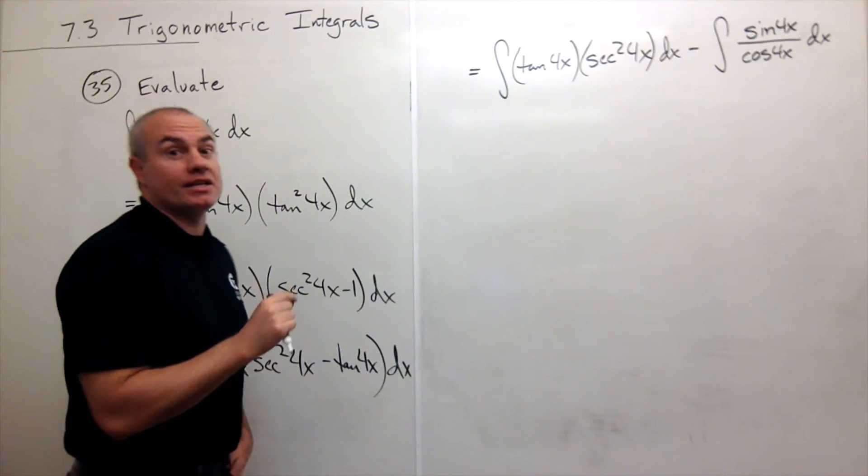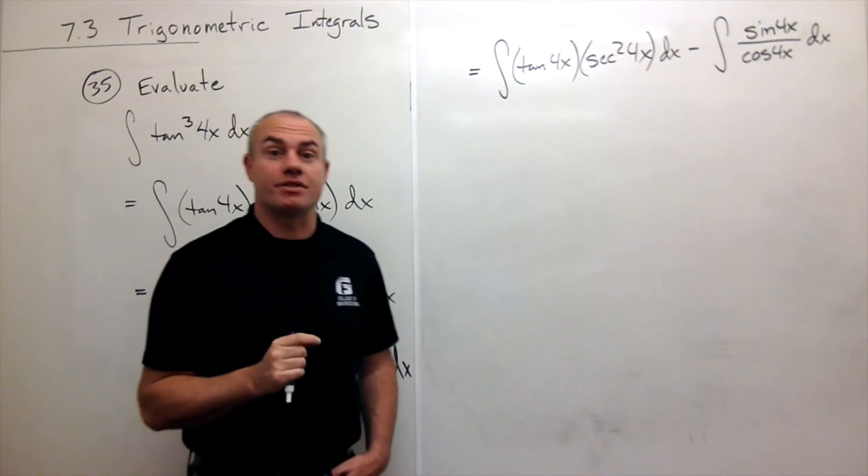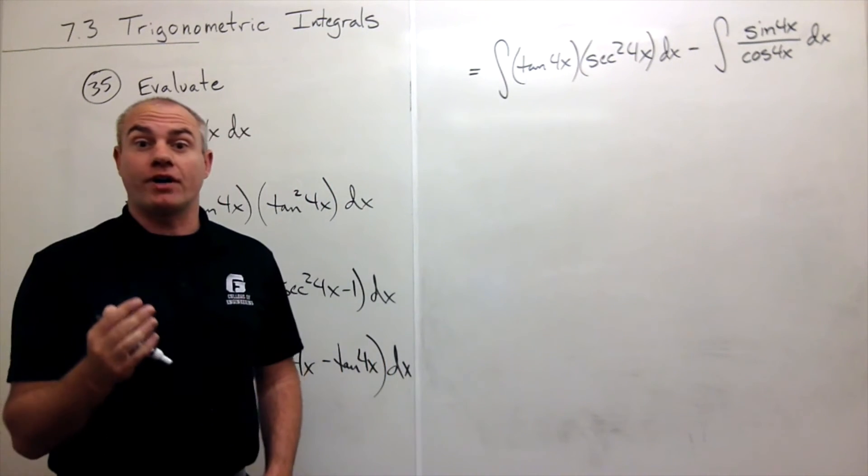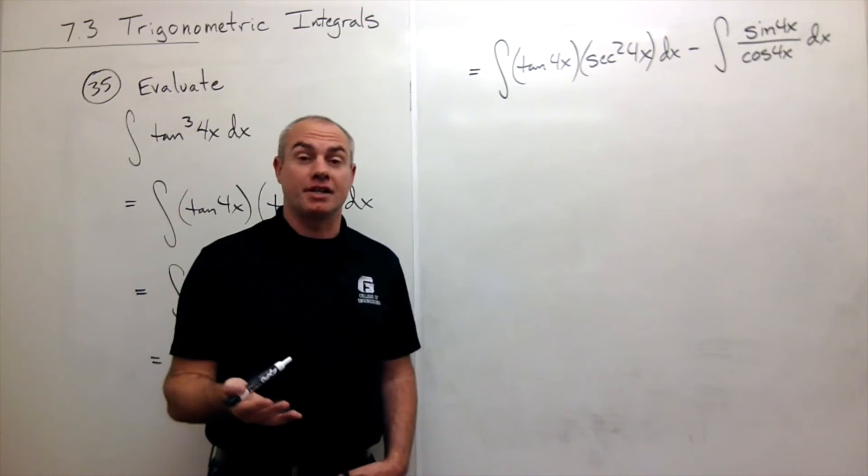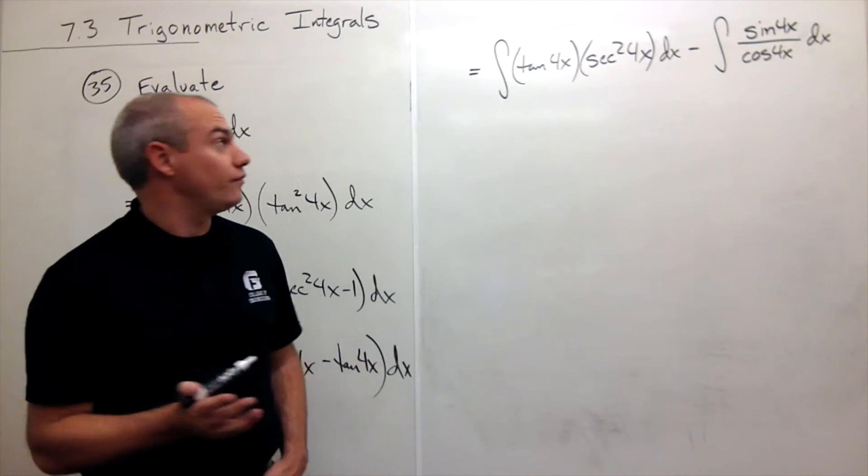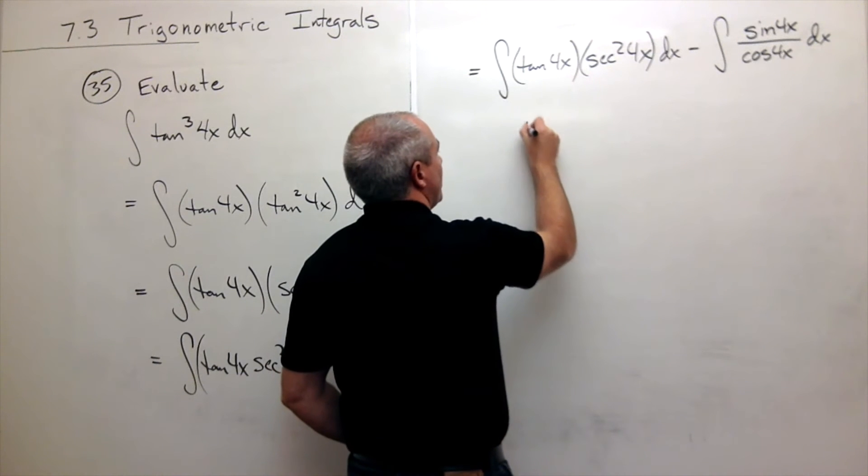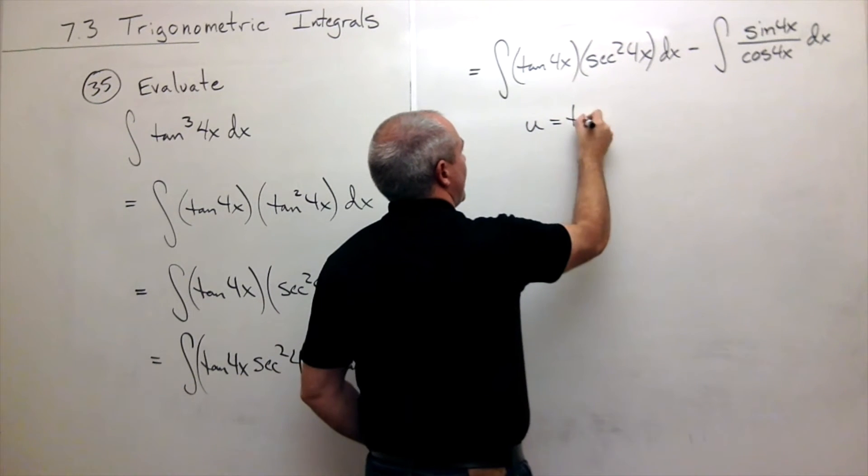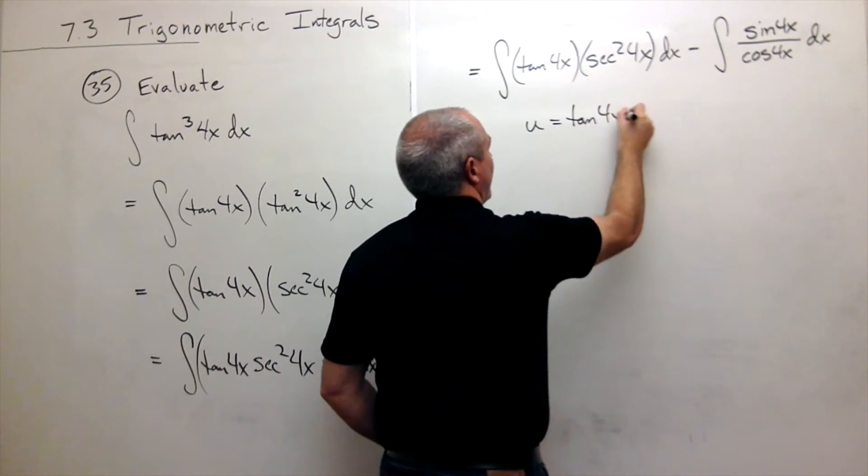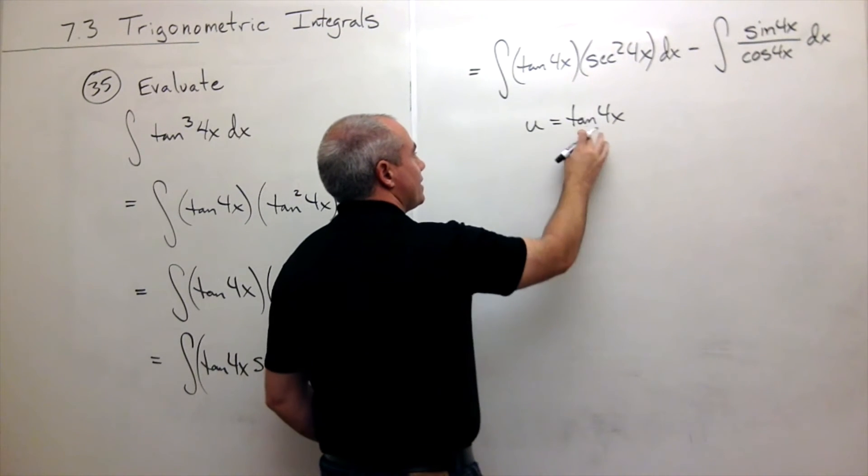Each of these I'm going to use a u-substitution on. It's a different substitution in each case, so let's not get confused. On this first guy, I want to use the following substitution. I want u to be tangent of 4x.